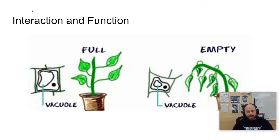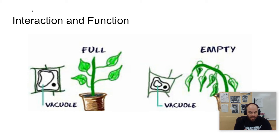What turgor pressure does is essentially force the water to the outside of the cell wall. Think of it like filling a Ziploc bag with water — the bag swells to the size of the bag and the sides push out. You can imagine plant cells doing this same sort of thing. This is a good thing for a plant because it gives the plant structure.